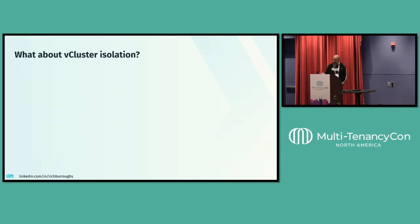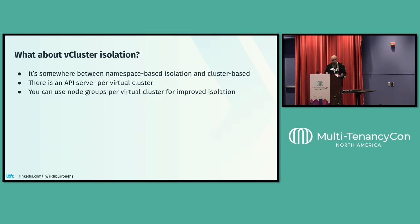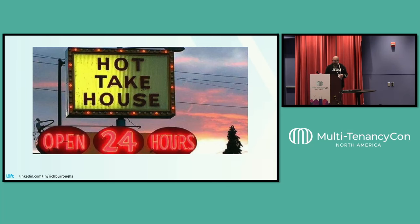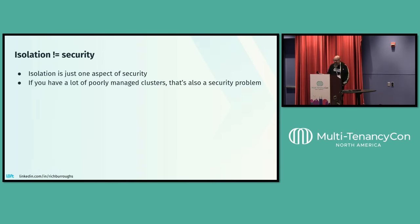So, what about vCluster isolation? It's somewhere between namespace-based isolation and cluster-based isolation. There is an API server per virtual cluster, so you're getting some API server federation there. You can also use node groups per virtual cluster to try to increase the isolation. But you still want to do the things that you normally would, like admission control on the underlying host cluster. My hot take is that isolation doesn't equal security. When we talk about multi-tenancy, people talk about isolation a lot, and it's very important, but it's just one aspect of security. If you have a lot of poorly managed clusters laying around, that's also a security problem.